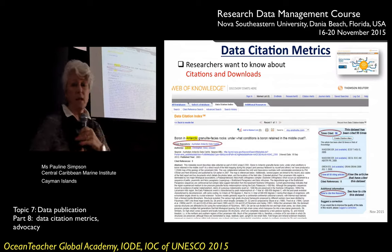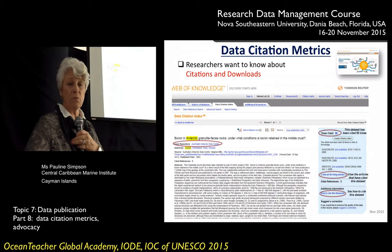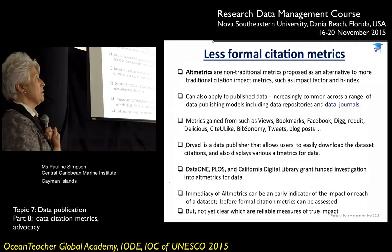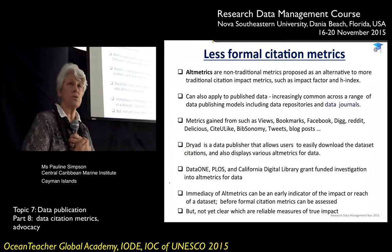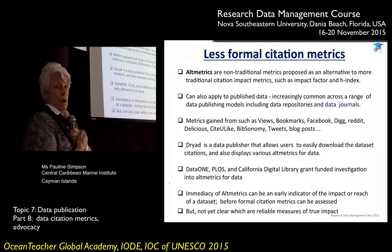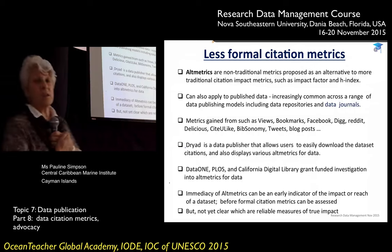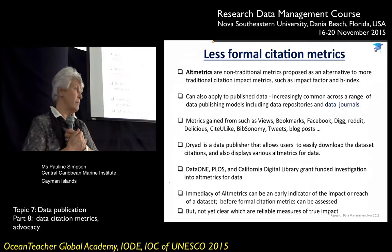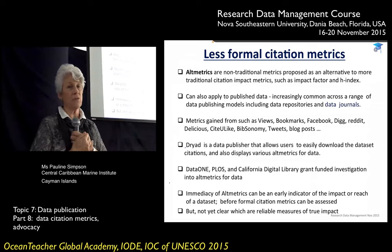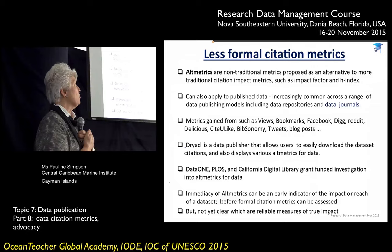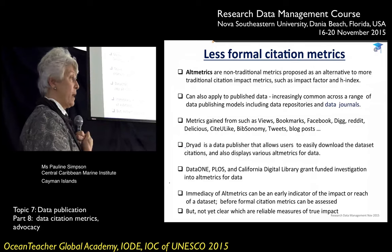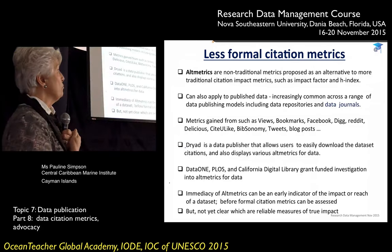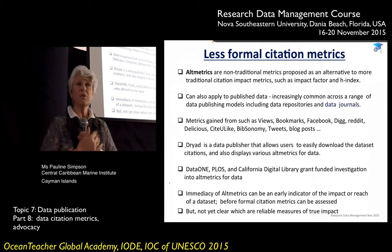That's a very formal tool but I'm sure it won't be the last. There are now growing numbers of less formal citation metrics for data, and the most well-known is altmetrics. Who's used or knows about altmetrics? They are non-traditional metrics — alternatives to more traditional forms like journal impact factors. Altmetrics can now also be applied to published data, and it's becoming increasingly common to start seeing altmetric badges on metadata records for datasets.